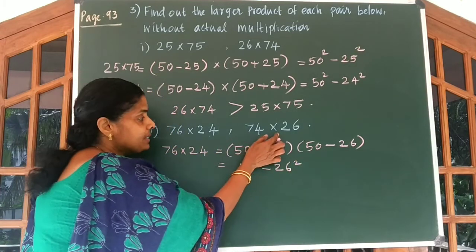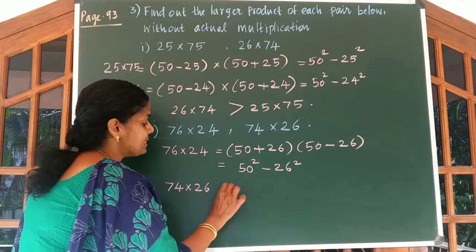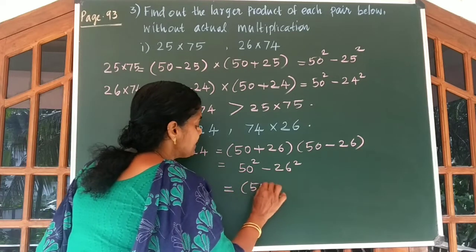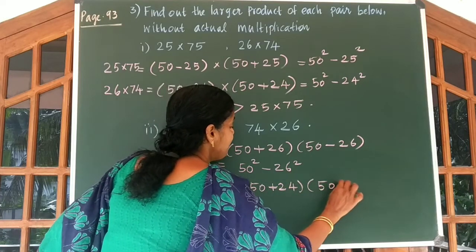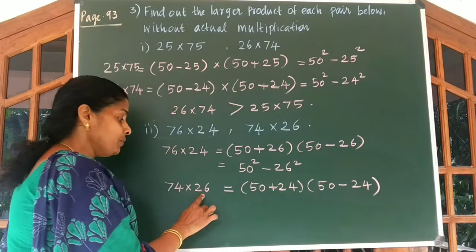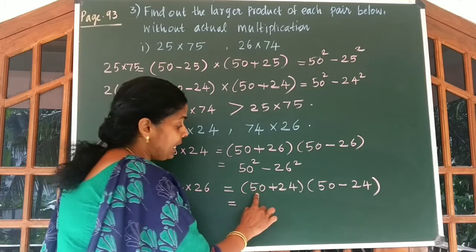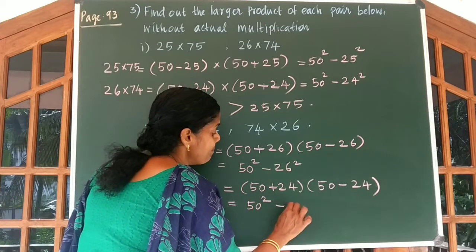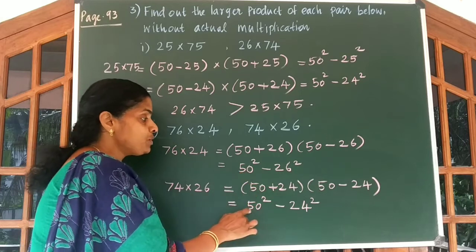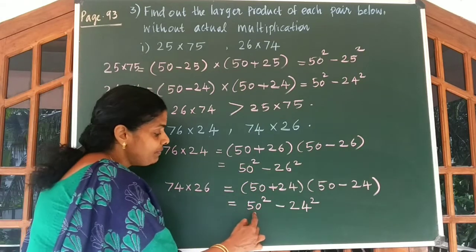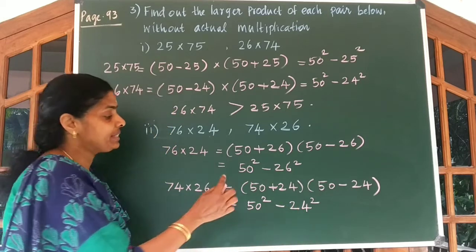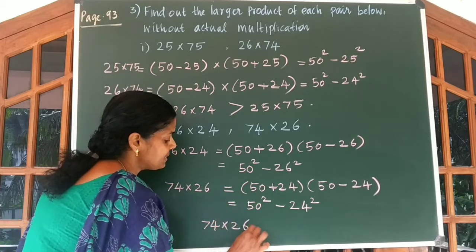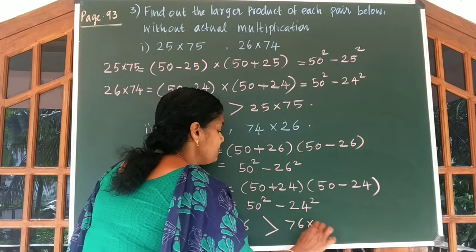The next product is 74 into 26. We can write 74 as 50 plus 24, so we get 50 plus 24 into 50 minus 24, which is again of the form (A plus B) into (A minus B), giving 50 square minus 24 square. We can easily understand that 50 square minus 24 square is always greater than 50 square minus 26 square. So 74 into 26 is greater than 76 into 24.